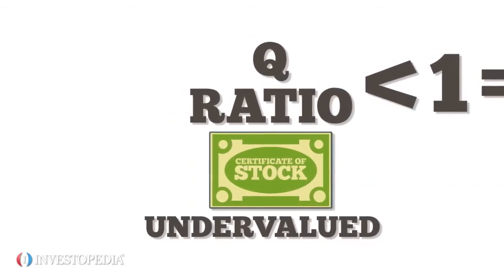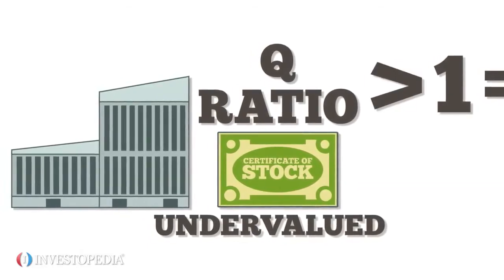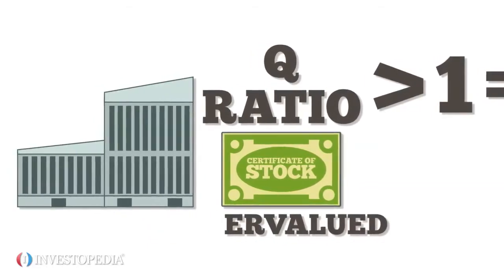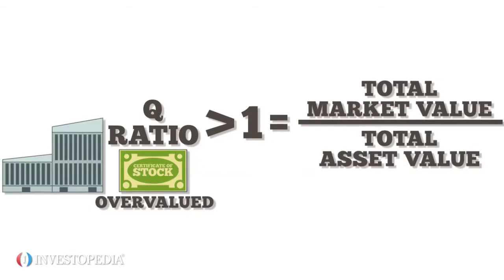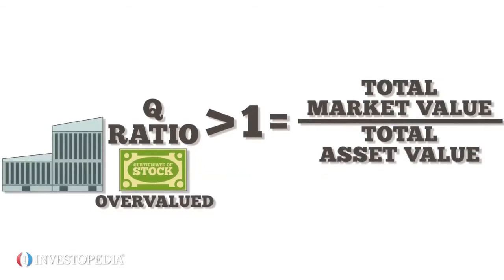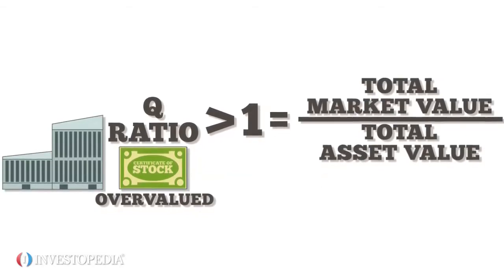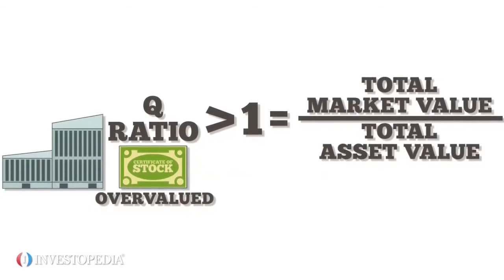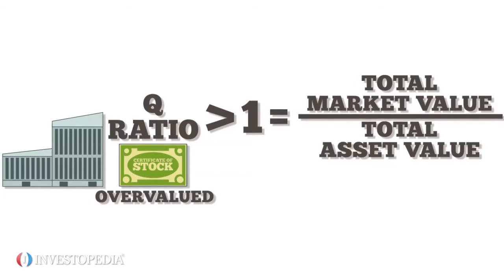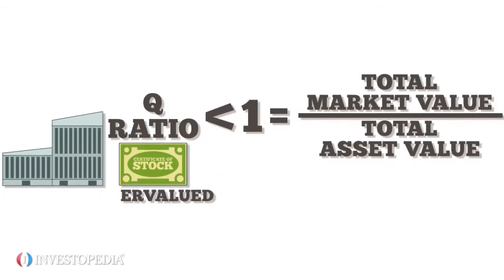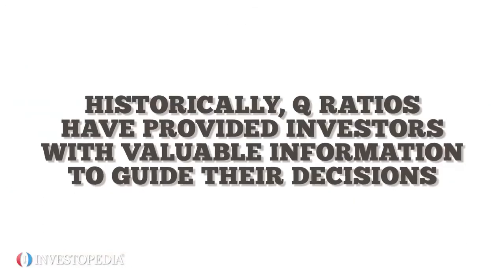When applied to an individual company, a Q-Ratio above 1 means it's overvalued — its stock is more expensive than the cost of its assets. When the total market value is below the cost of its assets, a firm's Q-Ratio is less than 1, meaning its stock is undervalued.